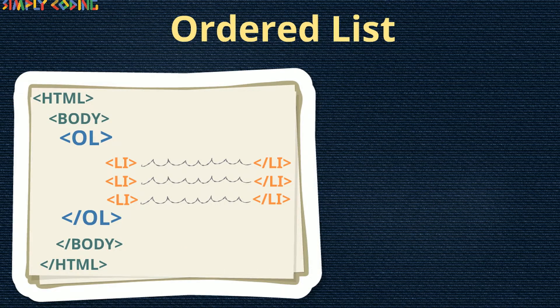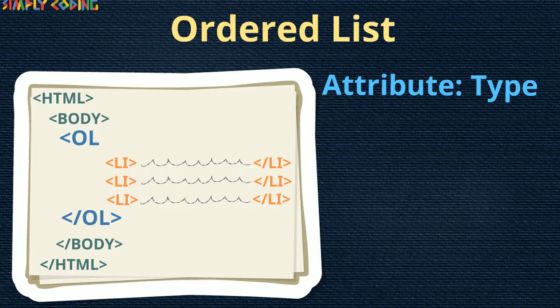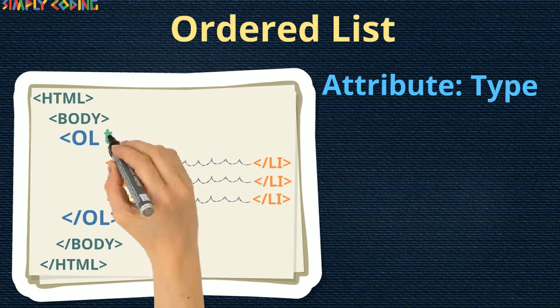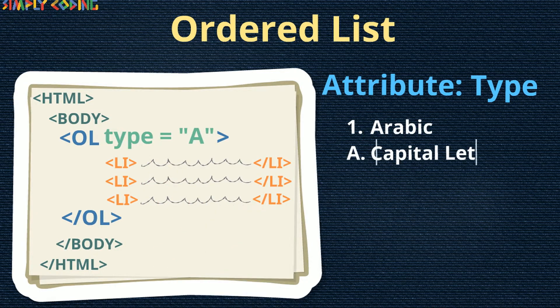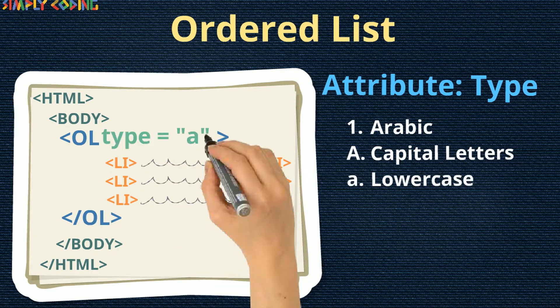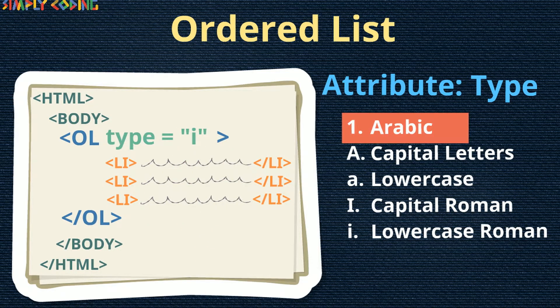The ordered list has two attributes. The first one is type, which has the values of 1, capital A, small a, capital I, and small i — with 1 being the default.